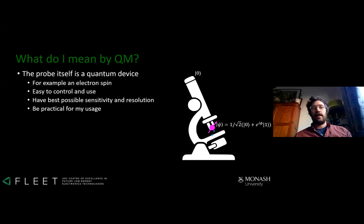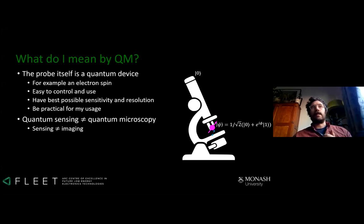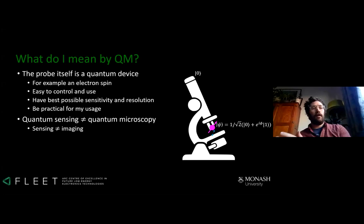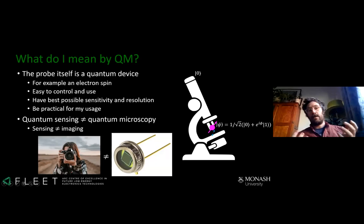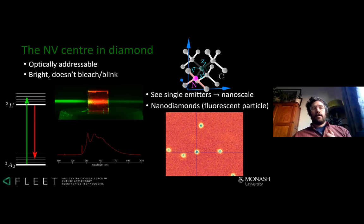Sensing and imaging are not really the same thing — spatial information is hard and expensive to obtain. If you've got a wide-field sensor with many spatial channels, you have to get all that data onto something like a camera. If you have a single spatial channel like a scanning probe, you have to raster it over your sample, which is quite slow. This is illustrated by the fact that a photodiode costs a dollar while a camera costs a thousand dollars.